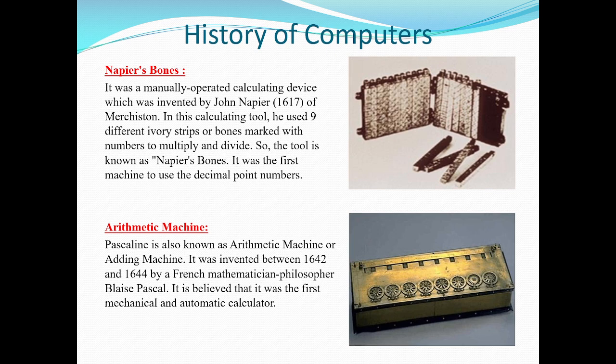Napier's Bones was the first machine which used decimal point numbers along with integers. The key points to remember are: it is a manually operated device, and people could perform addition, subtraction, multiplication, and division — not only on integer numbers but also on decimal point numbers.